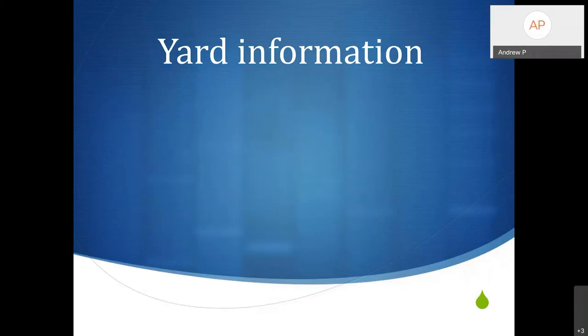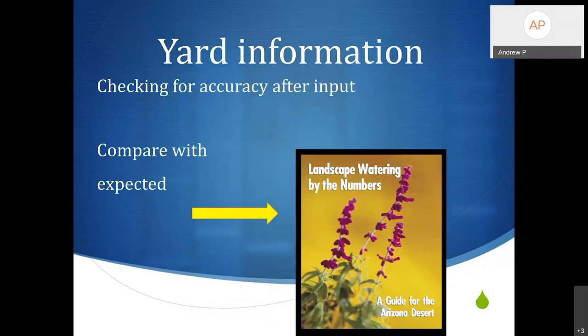After we're done, we're going to check for accuracy of our program. What you want to measure that up against is our Landscape Watering by the Numbers brochure. If you have a hard copy, great — you can also find it online. We're going to reference this when looking at how often it's going to water and how deeply. We want to double-check it with this brochure to make sure our selections are accurate. And if they are, then we know we did a good job with programming and everything is set to go.